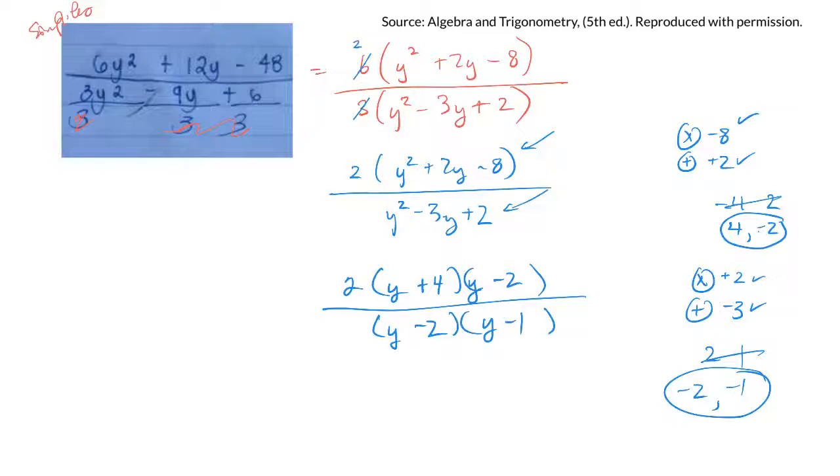And now, here's a common factor there, so I can cancel those out. So I'm left with 2 times y plus 4 over y minus 1. Hopefully that helps you with that question.